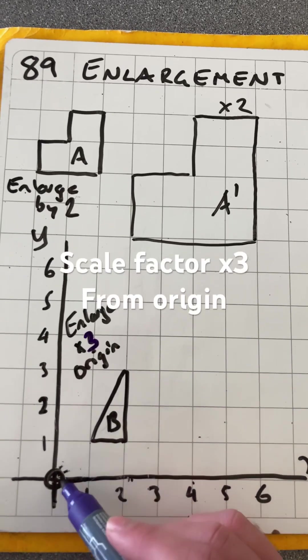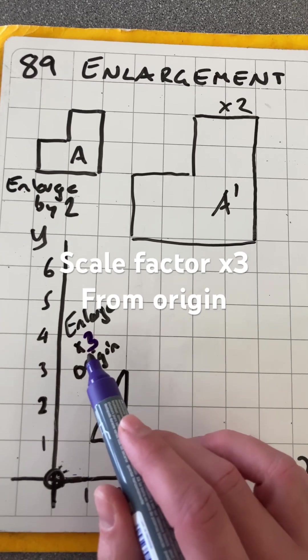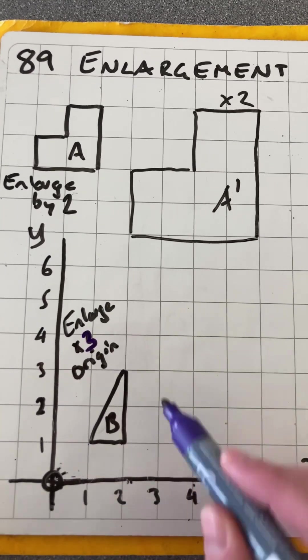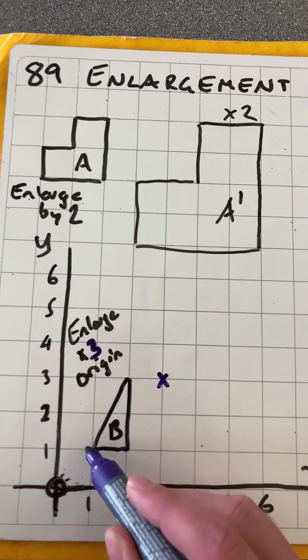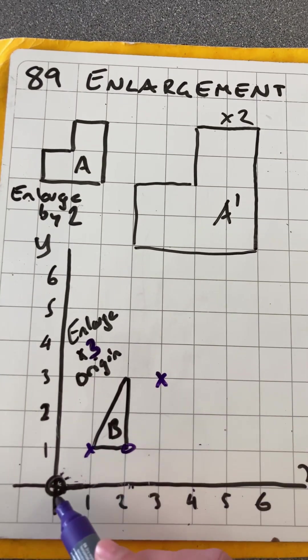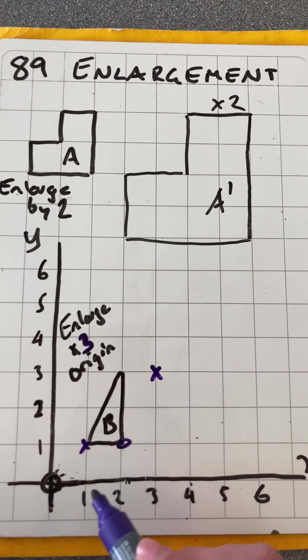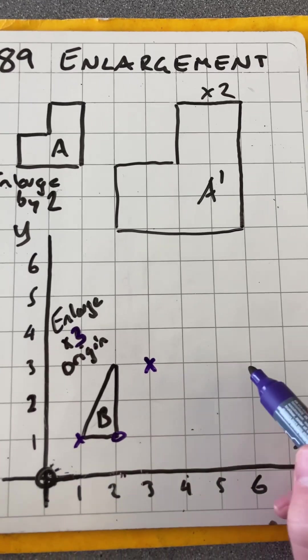So this point here is 1, 1. Now enlarging by a scale factor of 3, it'll start at 3, 3. So that's moved there. That point there is 2, 1, so it'll now move to 6, 3.